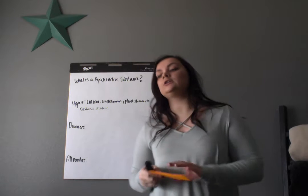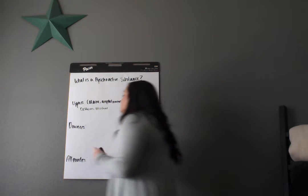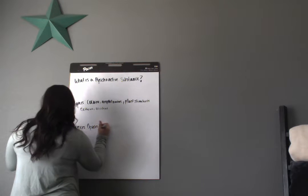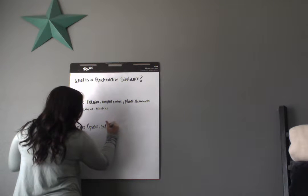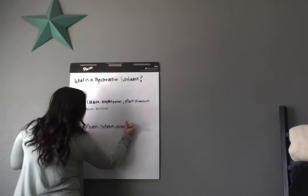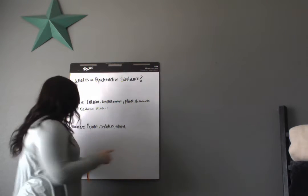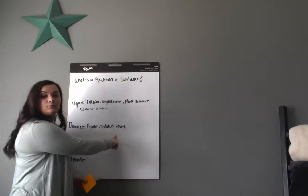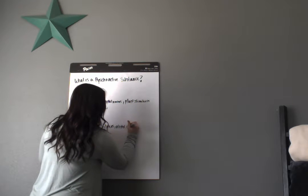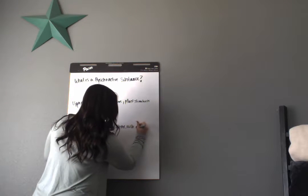So now we have Downers. Downers is going to depress the central nervous system. So types of Downers are going to be opiates. You have sedatives, things that make you sleep. You have alcohol. And with alcohol, it can fool you into thinking that it'll give you a rush when you start drinking more and more. But then it goes back to being a Downer because then afterwards, that's why everyone kind of passes out afterwards is because it is a Downer. And muscle relaxants.